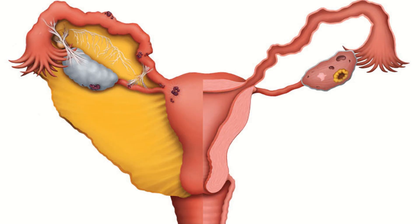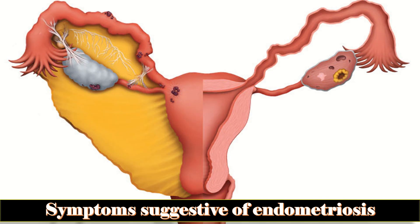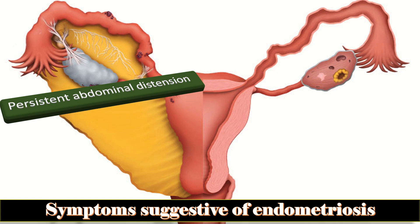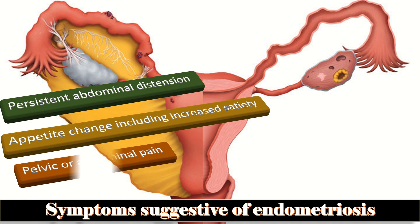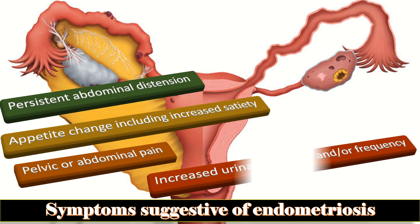Symptoms suggestive of endometriosis should be specifically considered, along with symptoms suggesting possible ovarian malignancy such as persistent abdominal distension, appetite change including increased satiety, pelvic or abdominal pain, and increased urinary urgency and/or frequency.